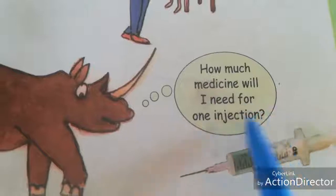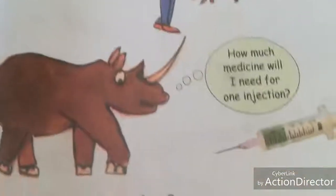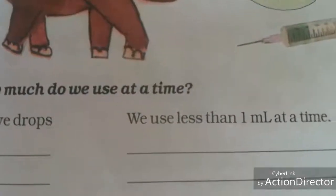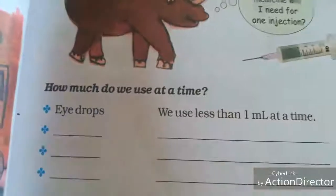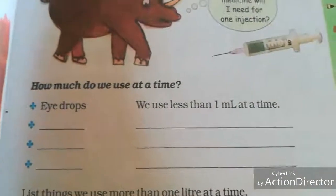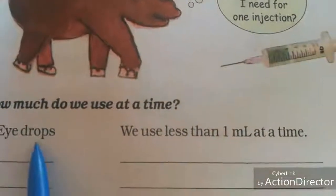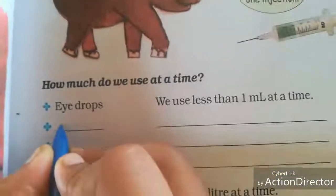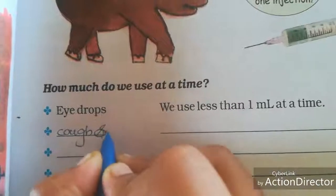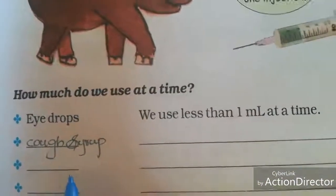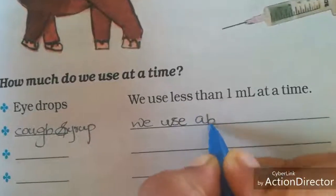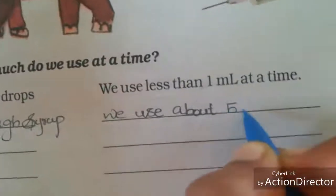Next question: how much medicine will I need for one injection? For eye drops, we use less than 1 ml at a time. For cough syrup, we use about 5 ml at a time. The doctor will say to use 10 ml or 5 ml. For babies and kids, the doctor will prescribe 5 ml at a time for cough syrup.